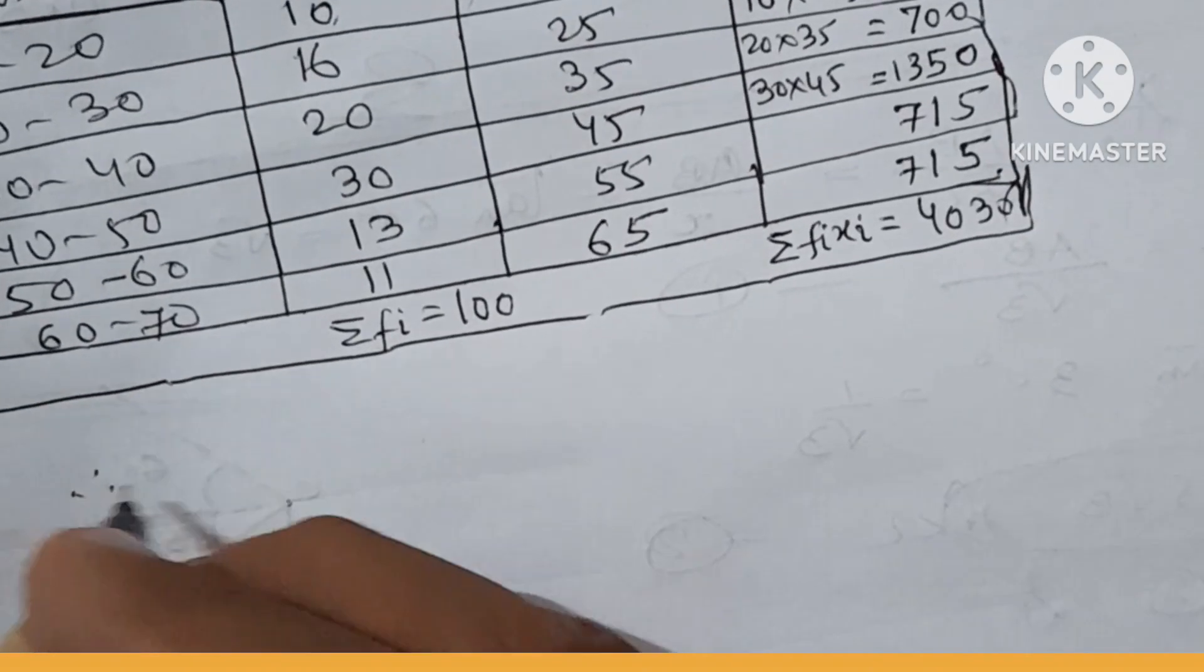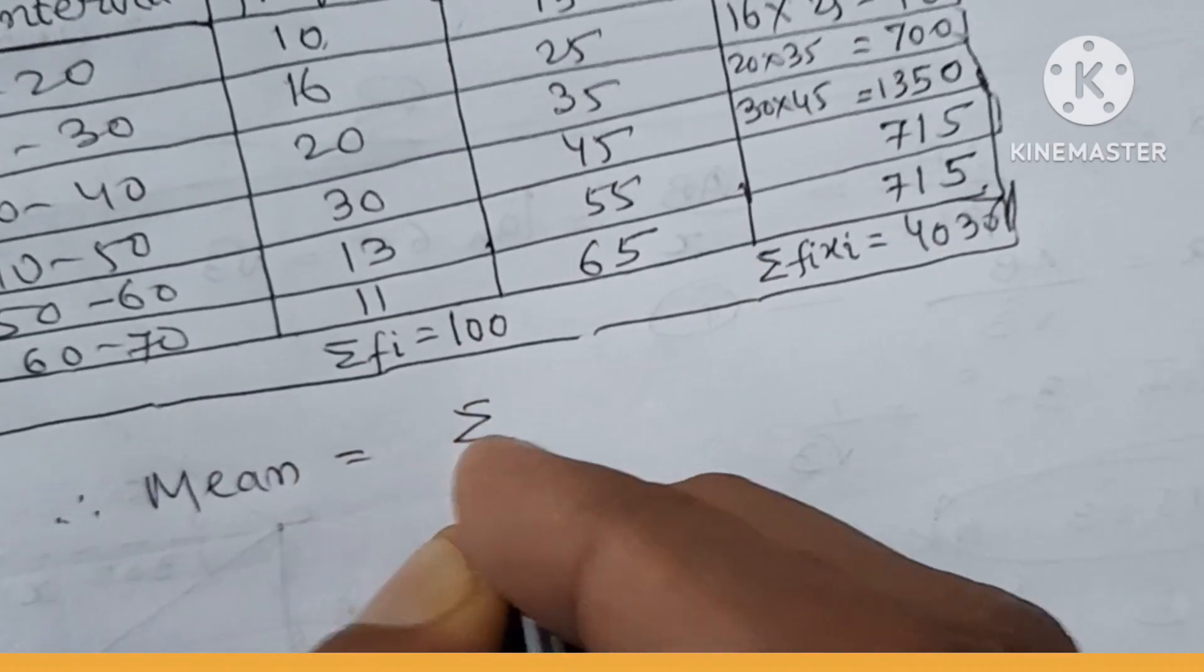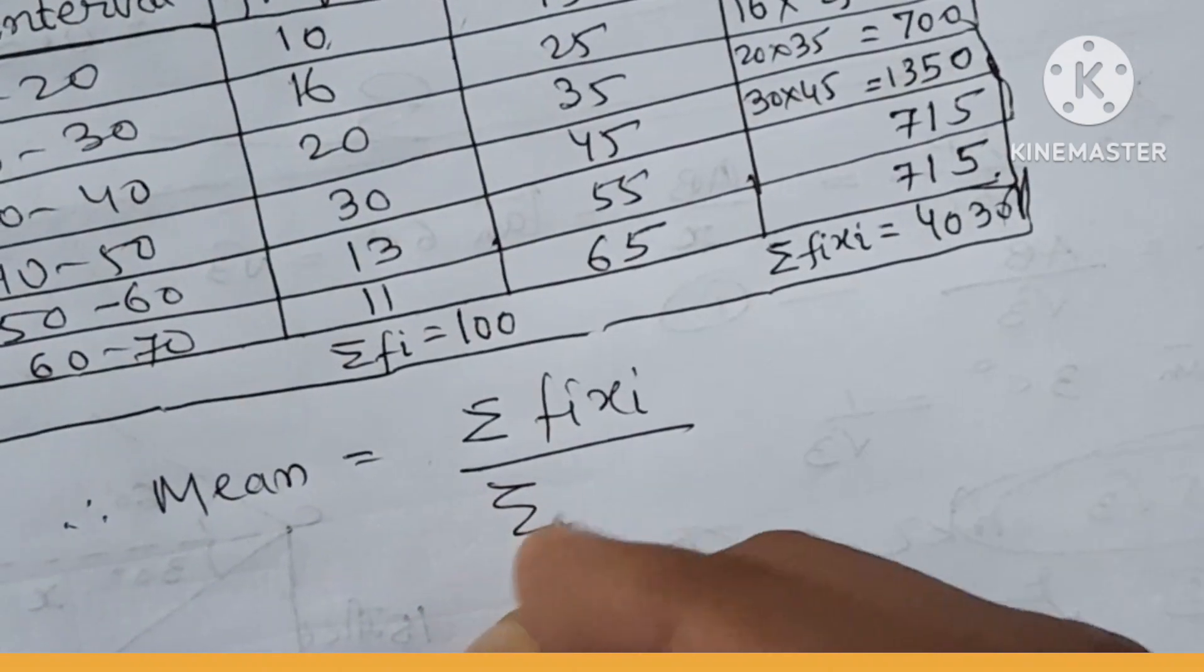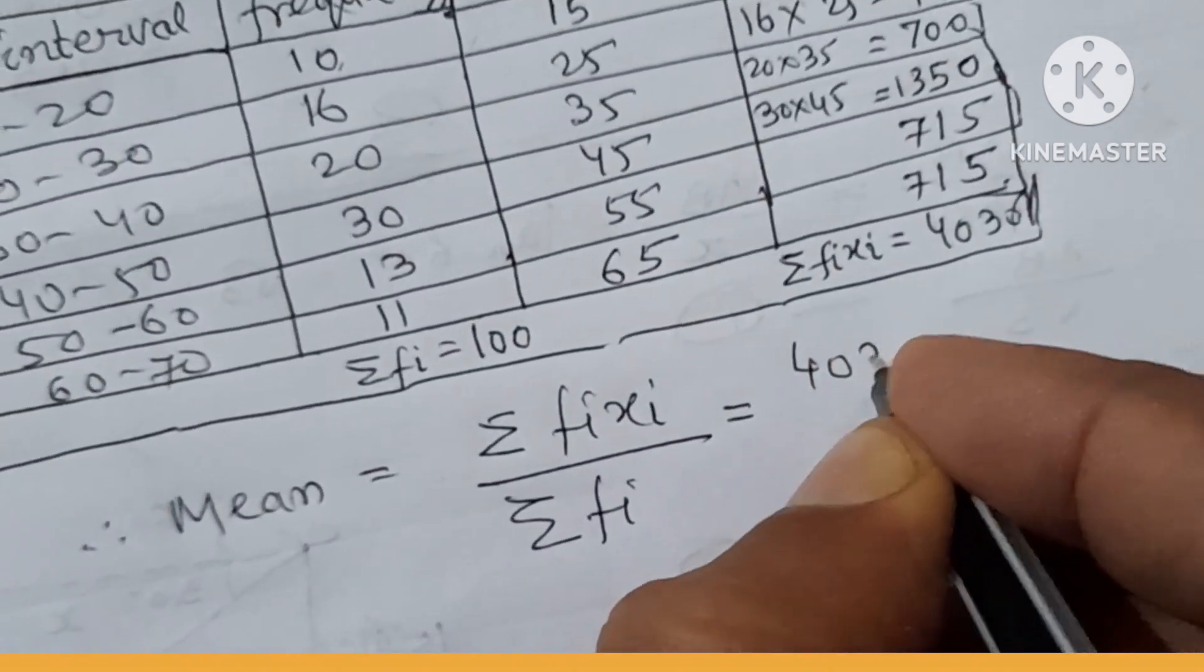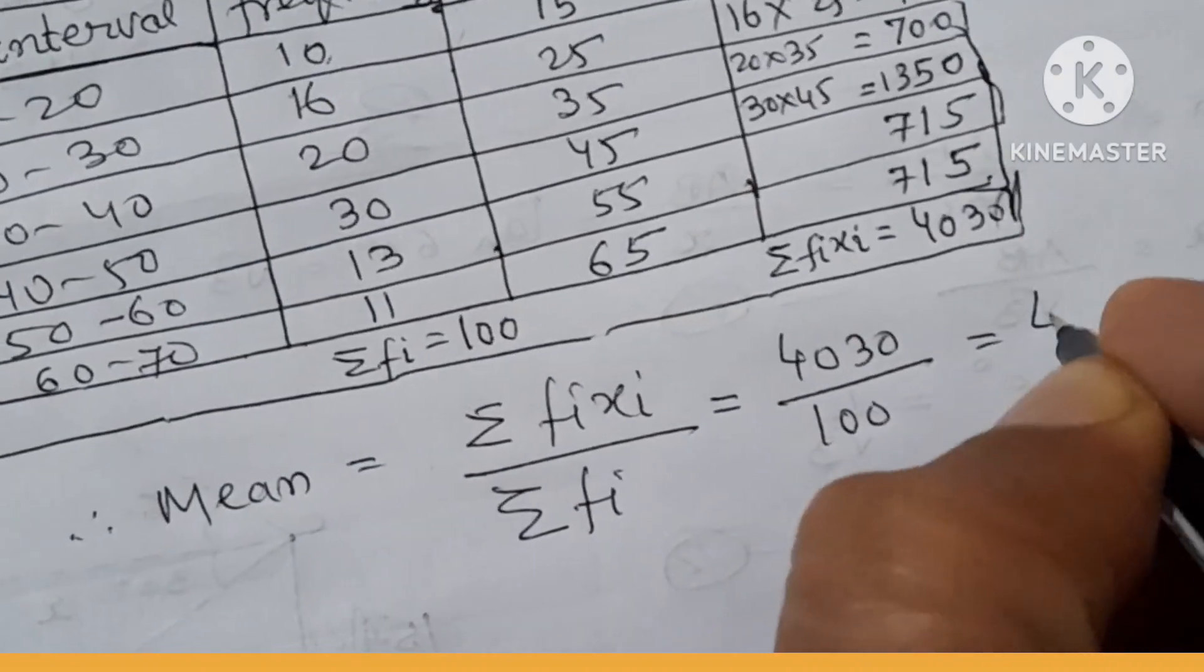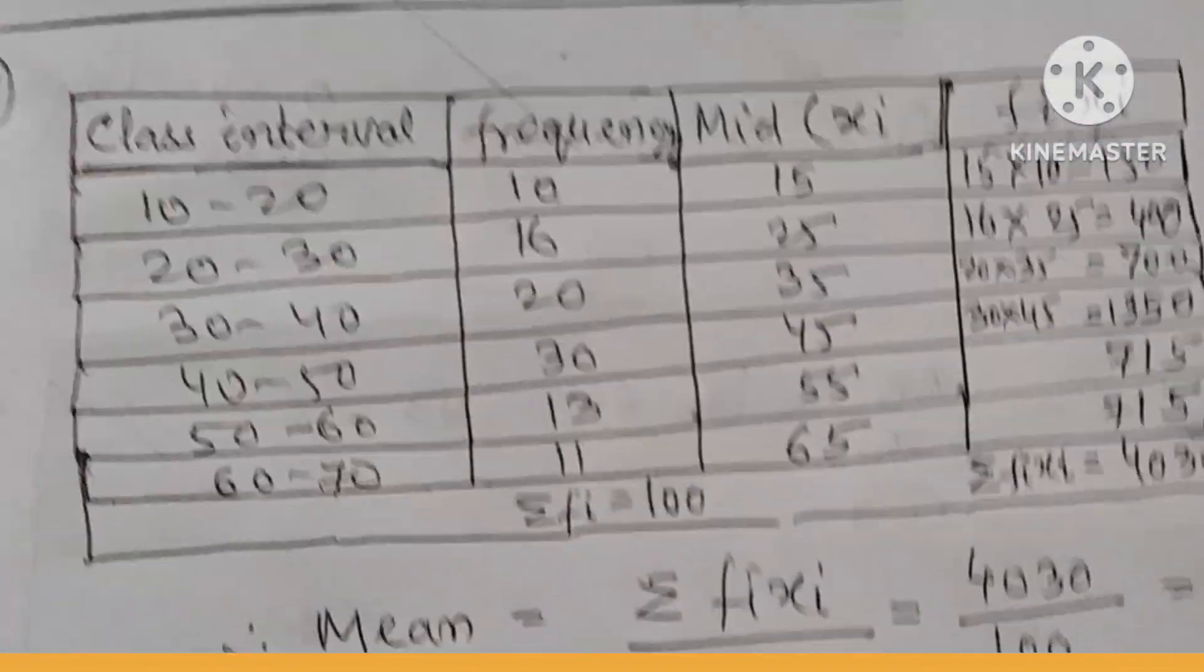Therefore, mean is equal to summation of fi XI by summation of fi. Putting the value of fi XI and fi, we get 4030 by 100, that is 40.30, and that is the answer. Thank you.